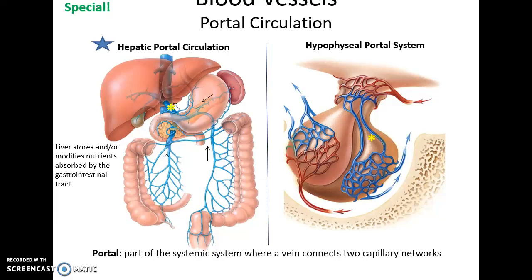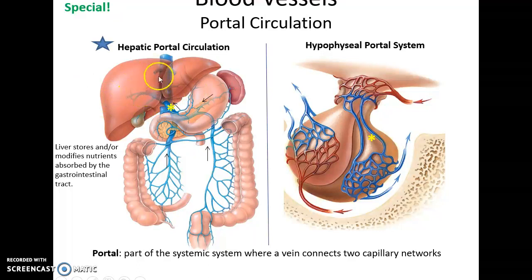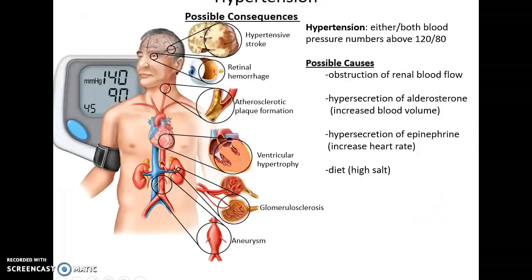Portal circulation occurs when two capillary beds are connected by a vein — this is very rare. In hepatic portal circulation, the capillary beds in the intestines drain through the hepatic portal vein into the liver, where blood enters another set of capillary beds, then enters the hepatic vein. Another example is found around the pituitary gland in the hypophysial portal system.